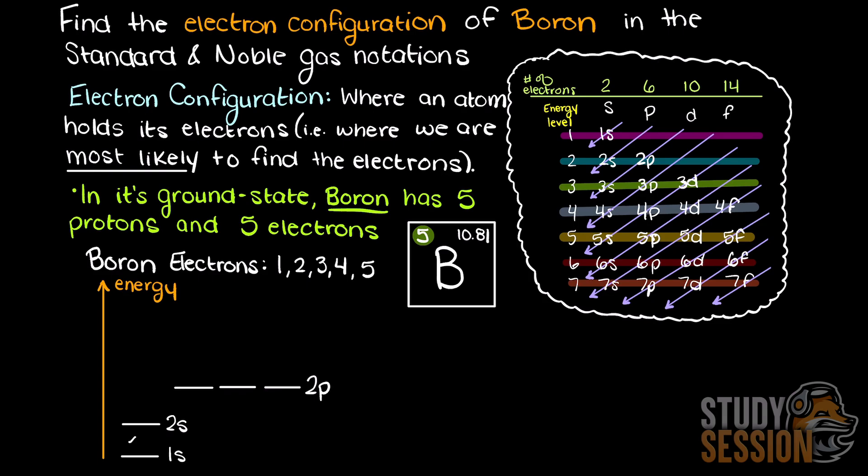Therefore, we will place our first two electrons in this orbital. Then we move to the next lowest energy state orbital, which is 2s. This orbital can also hold two electrons, therefore we place our third and fourth electron here.